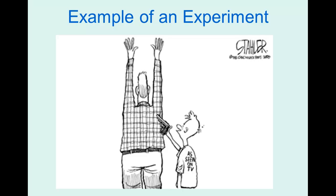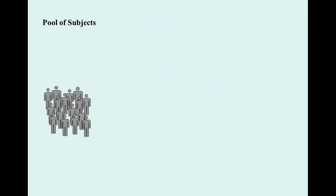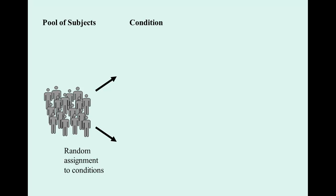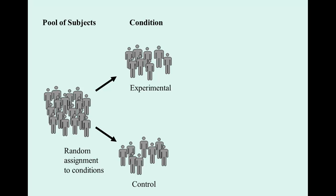Let's do this example from a pictorial perspective. Does watching violent TV cause violent behavior? We have a pool of subjects — let's say 100 children. We randomly assign them to two conditions: the experimental condition or the control condition. Random assignment helps balance out the groups for potential confounding variables. For example, if some kids come from violent households, random assignment should distribute them roughly equally across both groups so they balance each other out.